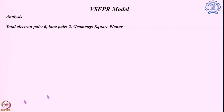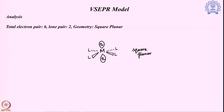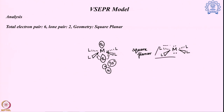With six electron pairs and two lone pairs, the lone pairs go exactly opposite to each other — 180 degrees apart — giving a square planar structure. Each lone pair faces lone pair–bond pair repulsion at 90 degrees with four bond pairs (eight total), but this is still the most stable orientation since the lone pair–lone pair repulsion is minimized by having them directly opposite.